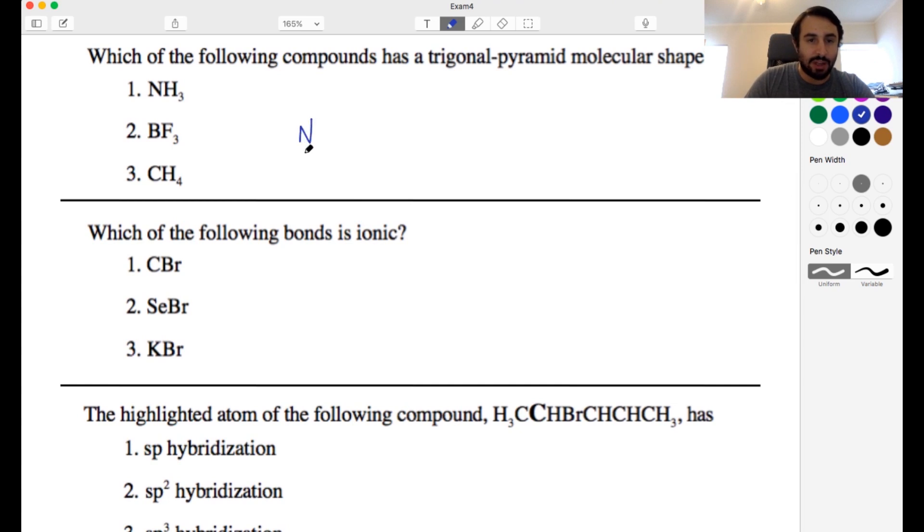So ammonia, we know that NH3 looks like this. We know that it has this configuration because of the lone pair on the nitrogen. Now BF3 is a little bit different because boron only has three valence electrons so it can only make three bonds and it will have no lone pair left over. So this will have a bit of a different shape and then methane as we know looks like this.